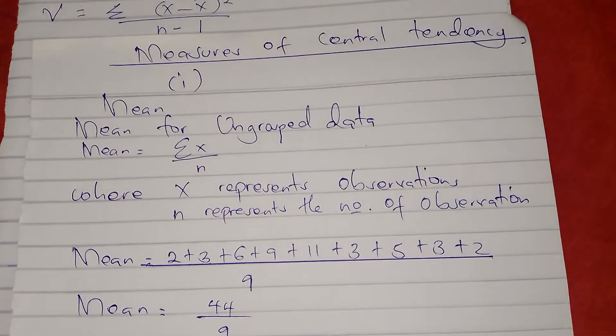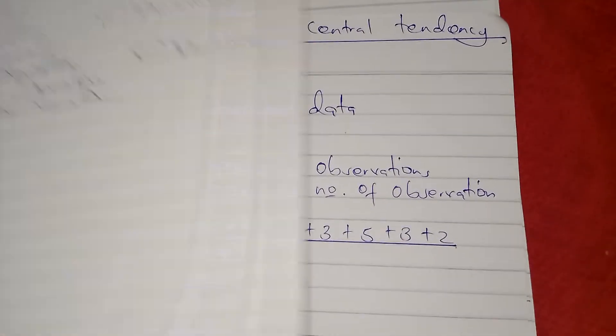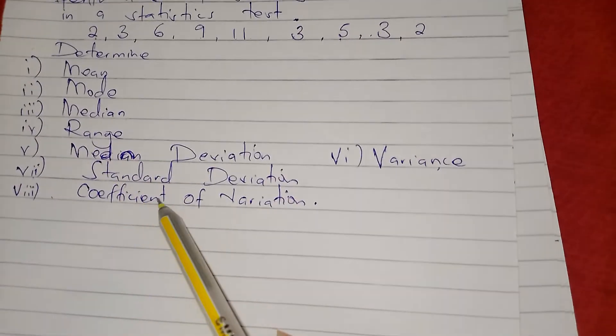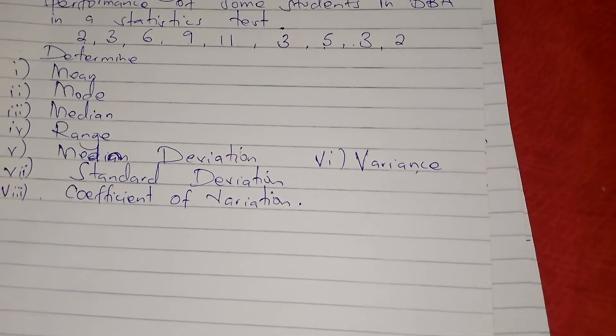So this has been ungrouped data for measures of central tendency. In the next video we shall be continuing to finish the remaining measures. Thanks for watching.